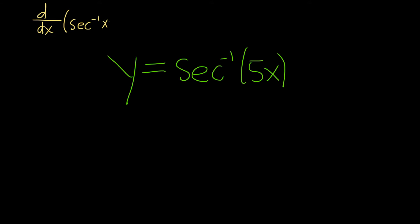Taking the derivative with respect to x of secant inverse, or the inverse secant, or arc secant of x, the formula is 1 over the absolute value of x times the square root of x squared minus 1.